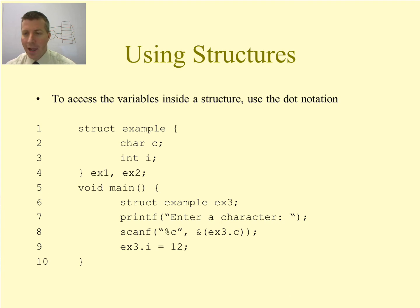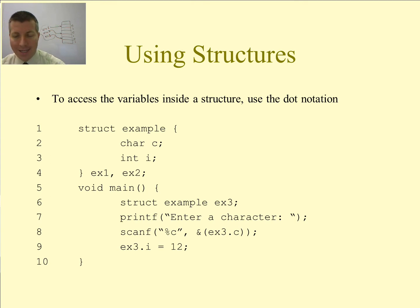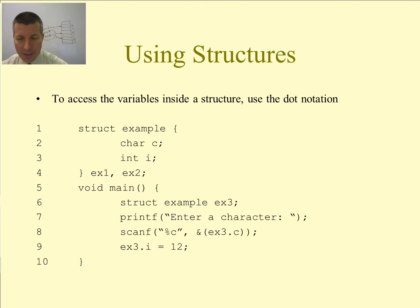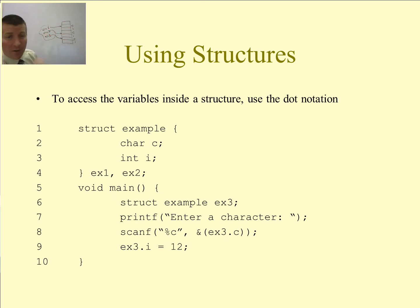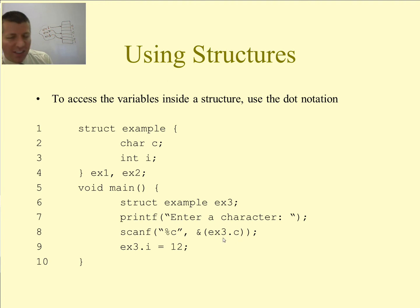So how do we go about utilizing structures? On line one I have struct example with char c and int i, and then ex1 and ex2. On line six I have struct example ex3. Inside my main function on line seven, I say enter a character. These are just variables like they were inside of arrays, so I have the option of reading a character into variable c. However, I can't just read it into c — I have to read it into the variable c associated with a specific instance of the structure. On line eight I'm reading a character into ex3.c. We use dot notation with structures, and ex3.c is nothing more than a character.